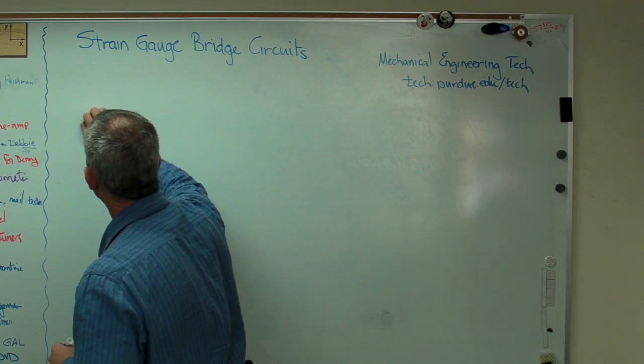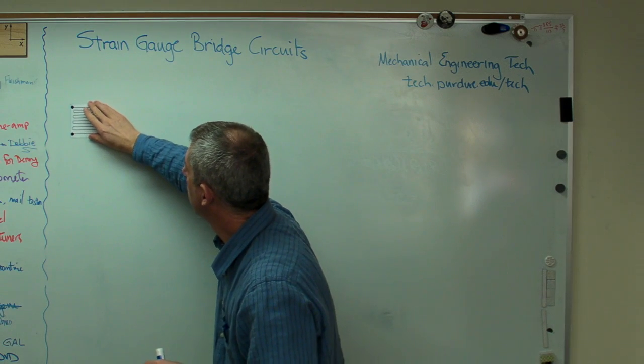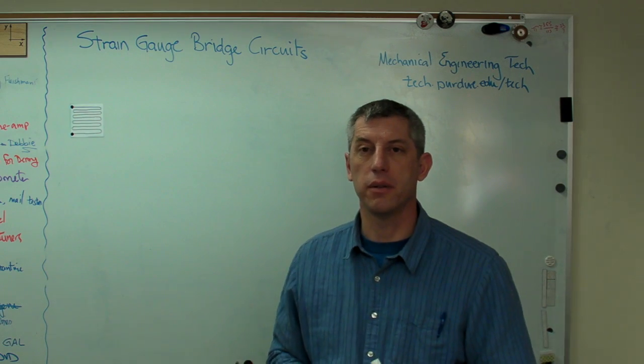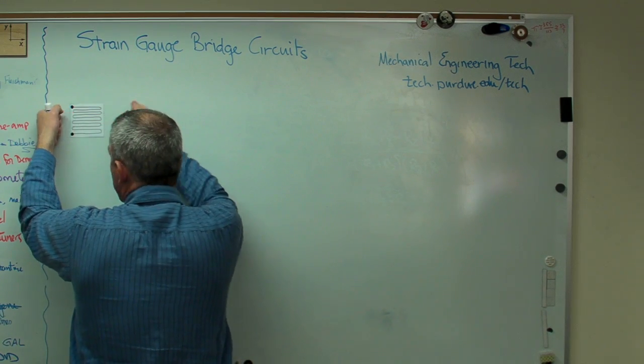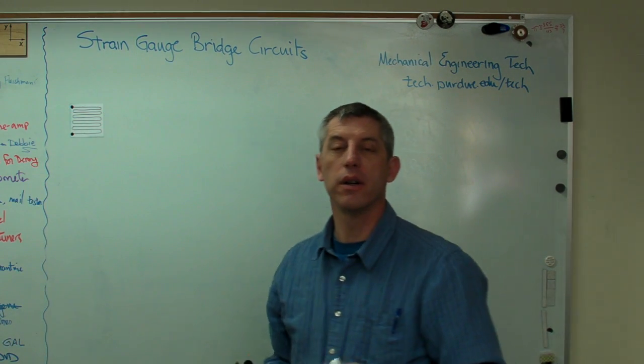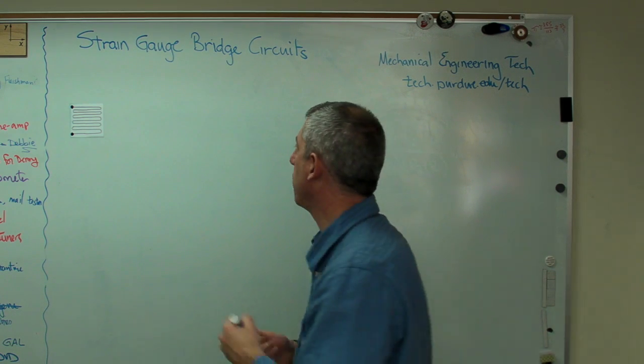I've got my little notional strain gauge here. That's basically a wire that's been wadded up and stuck on this little plastic substrate. When I put this on a part and I stretch this, that wire gets longer. When the wire gets longer, the resistance goes up. So that's the beginnings of our gauge system.